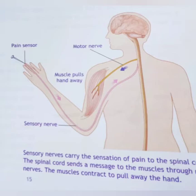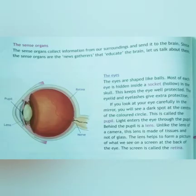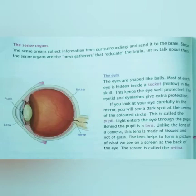Next we are going to learn about your sense organs. The sense organs collect information from our surroundings and send it to the brain. For example, our eyes collect information from our surroundings — what objects are around us and who is in front of us. The sense organs gather a lot of information from the environment and send it to the brain. That is why our sense organs are called news gatherers.